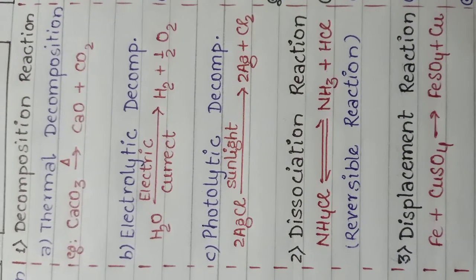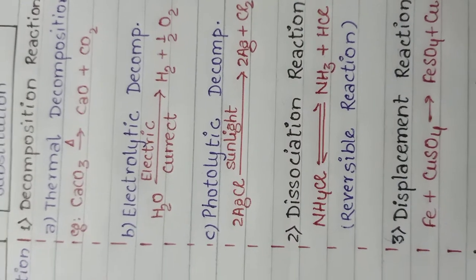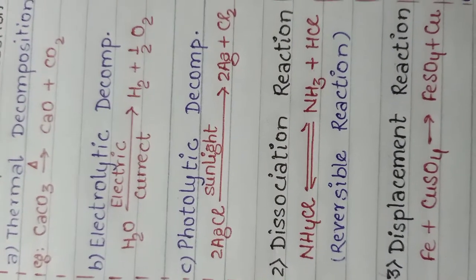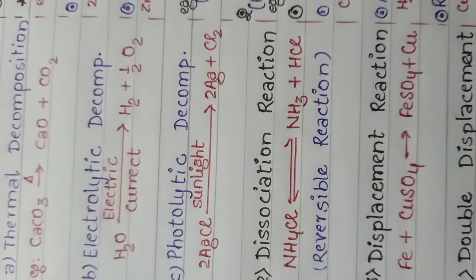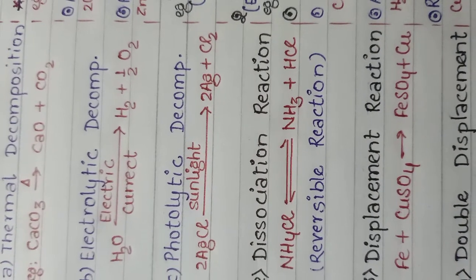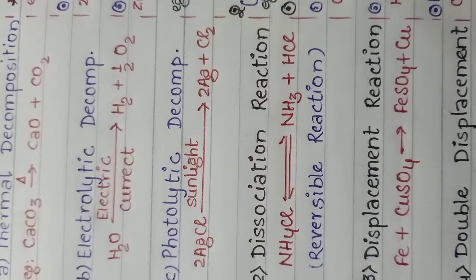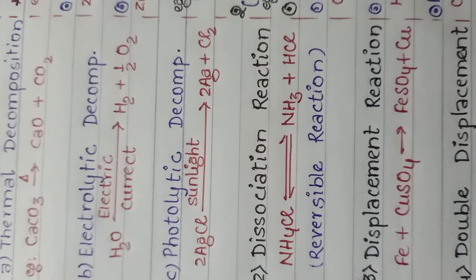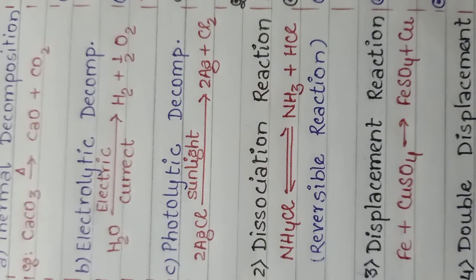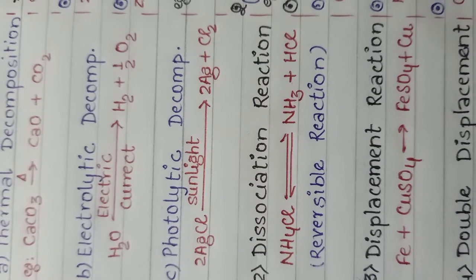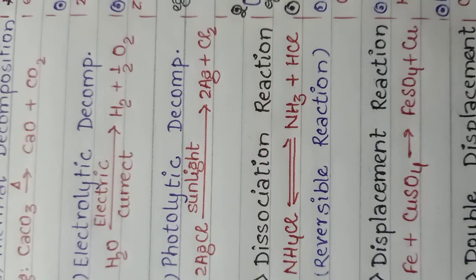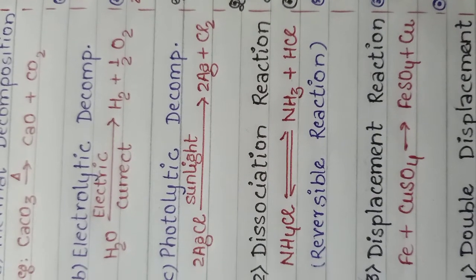Next, electrolytic decomposition reaction. When a decomposition reaction is carried out by electric current, it is called electrolytic decomposition reaction. For example, when water decomposes to form hydrogen and oxygen gas in the presence of electric current, it is a type of electrolytic decomposition reaction.